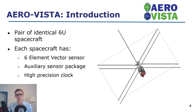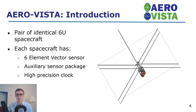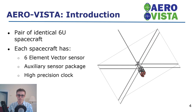The Aero and Vista spacecraft are a pair of identical 6U CubeSats. Each spacecraft has a six-element vector sensor, which is three orthogonal dipole antennas and three orthogonal loop antennas. Together these antennas can completely measure the direction of the magnetic and electric fields, allowing you to determine direction of propagation and polarization information even though each antenna element is electrically small. Each spacecraft also has an auxiliary sensor package with magnetometers and spectrophotometers, and a high precision clock that we'll discuss later.